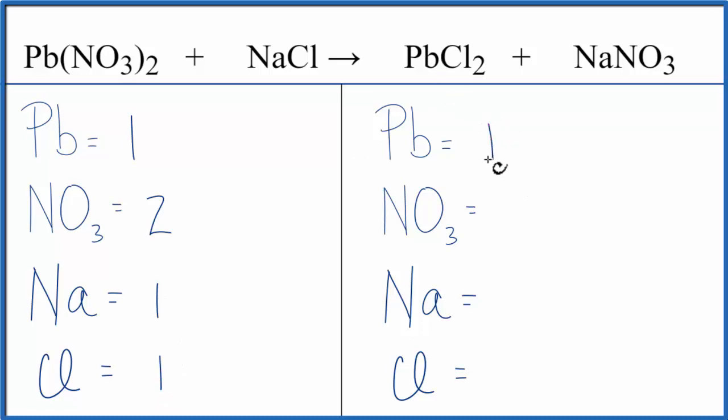On the product side, we have 1 Pb. NO₃, we have just the 1 here. Na, we have 1. And Cl, we have 2. So everything's okay except the Cls and the nitrate, the NO₃.